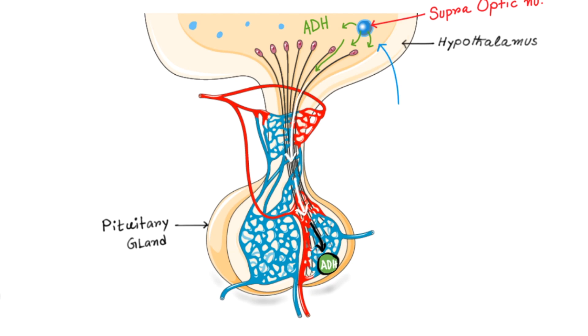Here I would like to mention an important concept that ADH synthesizes in hypothalamus and secretes from the posterior pituitary. So posterior pituitary doesn't produce ADH, it is just like a storehouse from where ADH secretes into the general circulation.